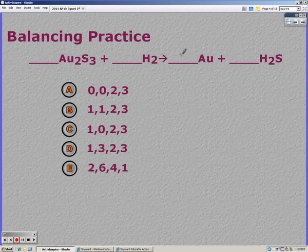So listing out your elements you have two gold, so I have two gold. Three sulfur, I need a three there. And that's six hydrogen so I'm going to need a three here. Double check everything is correct. And it is so that gives me D as in dog.